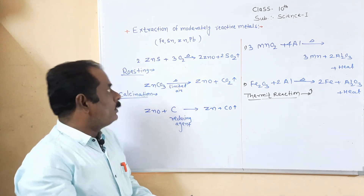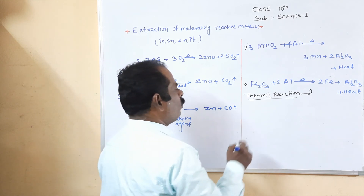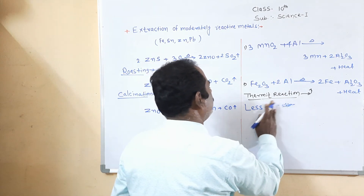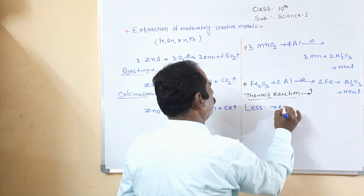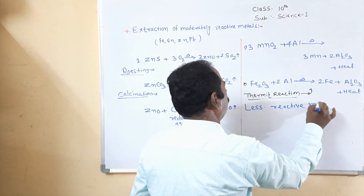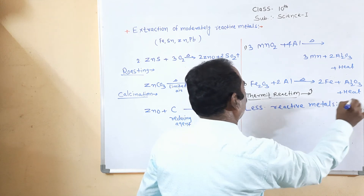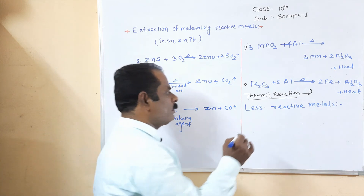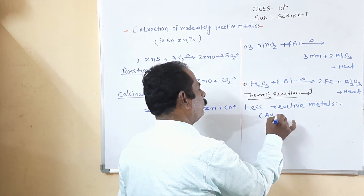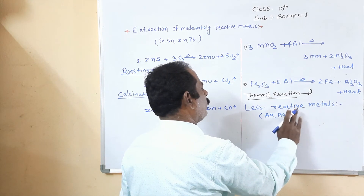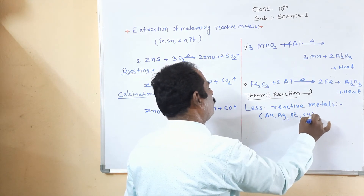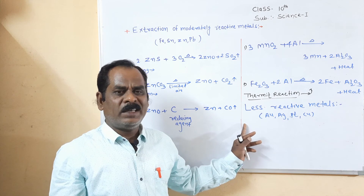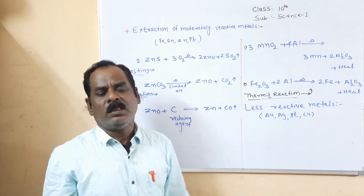The next point is the extraction of less reactive metals. Less reactive metals include gold, silver, platinum, and copper. Generally, less reactive metals are extracted simply by strong heating in air.